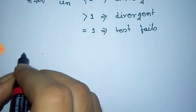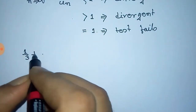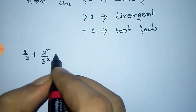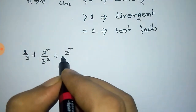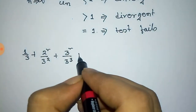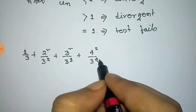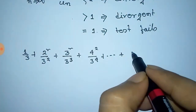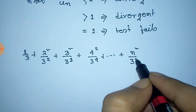Now we shall take an example of a series like 1/3 plus 2² / 3² plus 3² / 3³ plus 4² / 3⁴ plus dot dot dot. The nth term of this series is u_n = n² / 3^n.